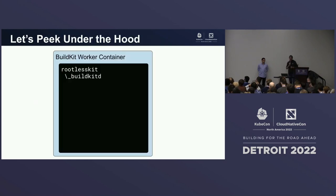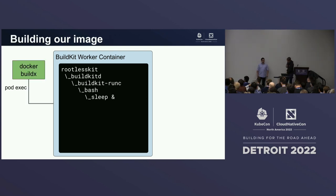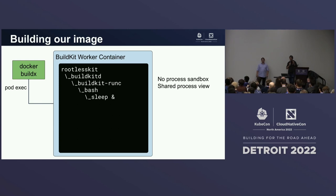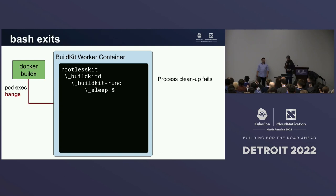Looking at the anatomy of the BuildKit worker: the BuildKit daemon runs, BuildX does an exec in the pod, starts the build steps — here it runs bash, and bash runs sleep in the background. Importantly, there's no process sandbox. We can see all the processes in the container. If you exec into this pod and run ps, we see our build step but also BuildKitD and everything. When bash exits, the build hangs and the process is still there and never cleaned up.